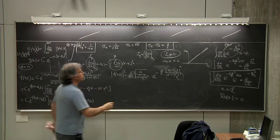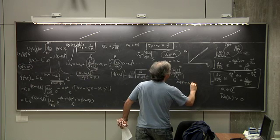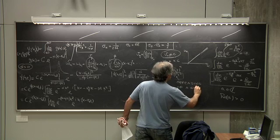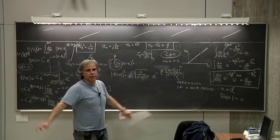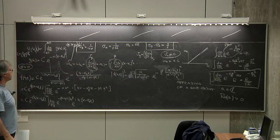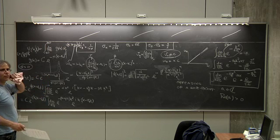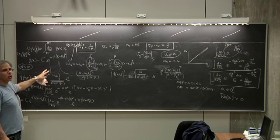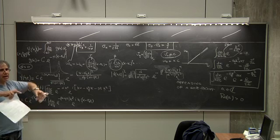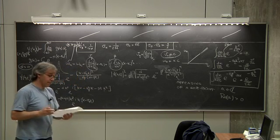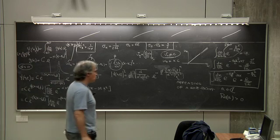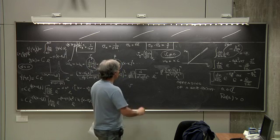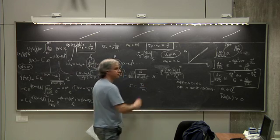This is called spreading of a wave packet. Wave packets sooner or later will be very broad if t becomes very large. You could play around a lot with this form — if you are knowledgeable about computers, you could try to draw these things as a function of time and see how the thing evolves. But what I want to point out now is that we still have to determine how we can describe a non-relativistic particle.